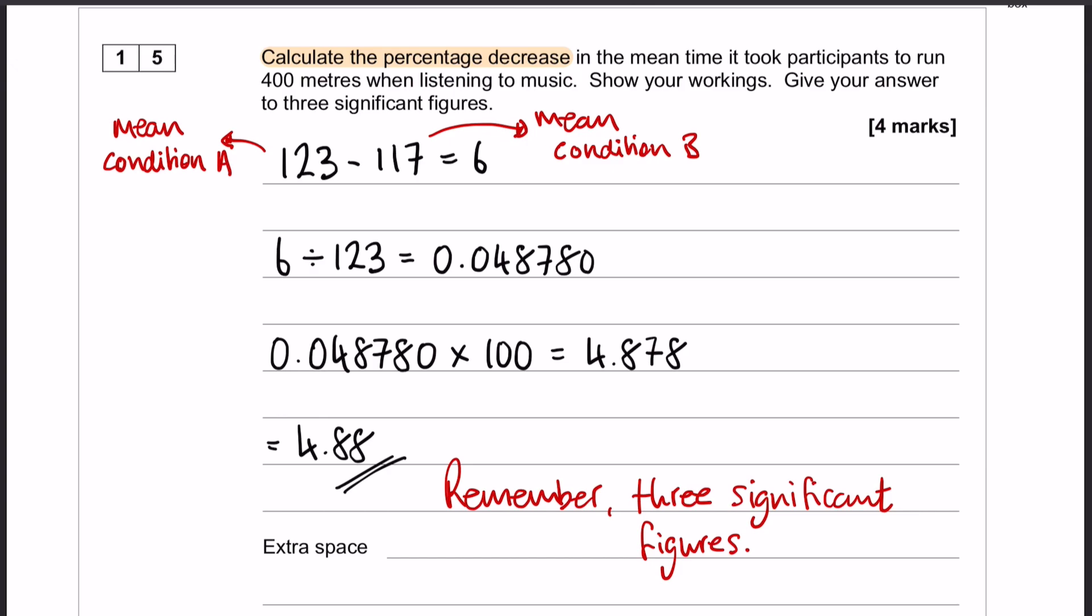Okay, so there is a 4.88% decrease in the mean time it took participants to run 400 meters when listening to music.